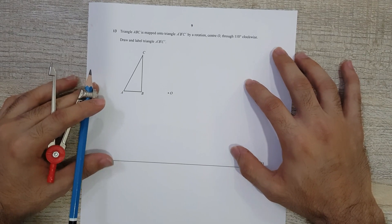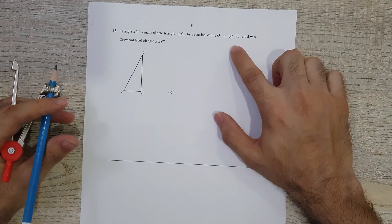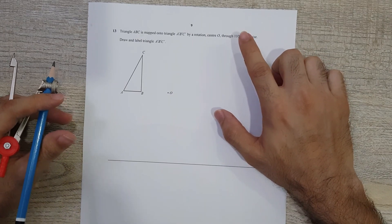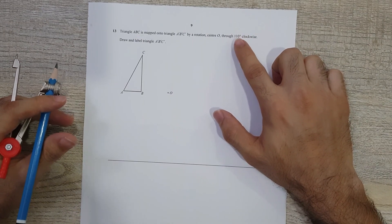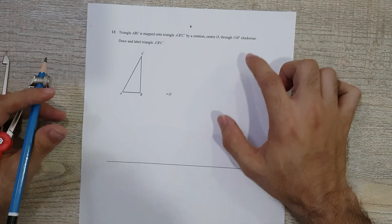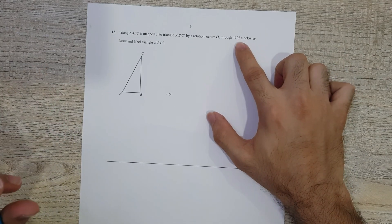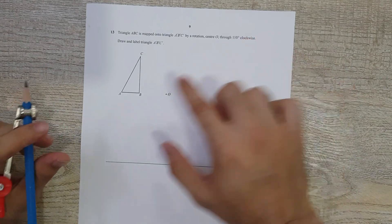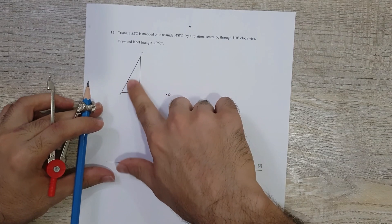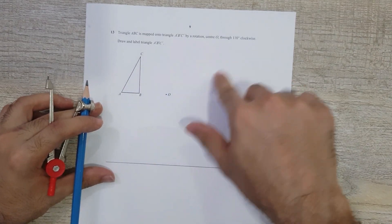In this you're asked to rotate a triangle 110 degrees. That's what makes it unique. Normally we're asked to rotate it multiples of 90 degrees, but in this you have to rotate it 110 degrees clockwise.